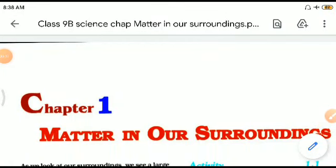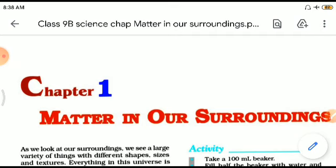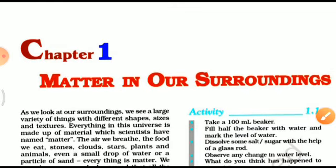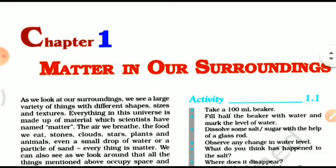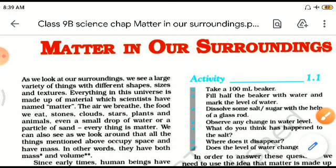Good morning children. I welcome you to today's discussion of science, and we are on to the chapter 'Matter and Our Surroundings.' All around us there is matter. Matter is something which has weight and occupies space. So all around we see things which have weight and occupy space. Air, food, stones, clouds, everything - even a small drop of water has weight and occupies space. So everything is matter.